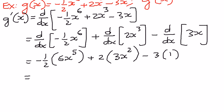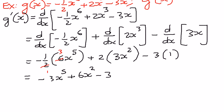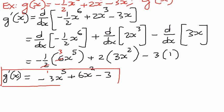We can simplify further: we have 6 in the numerator and 2 in the denominator — 6 divided by 2 is 3 — so the first term simplifies to negative 3x to the power of 5. The second term: 2 times 3 is 6x squared. The third term: 3 times 1 is 3. So g prime of x equals negative 3x to the power of 5 plus 6x squared minus 3. This is our answer.